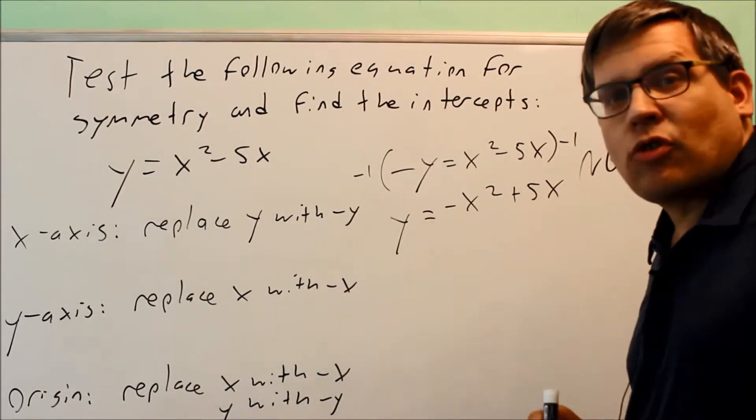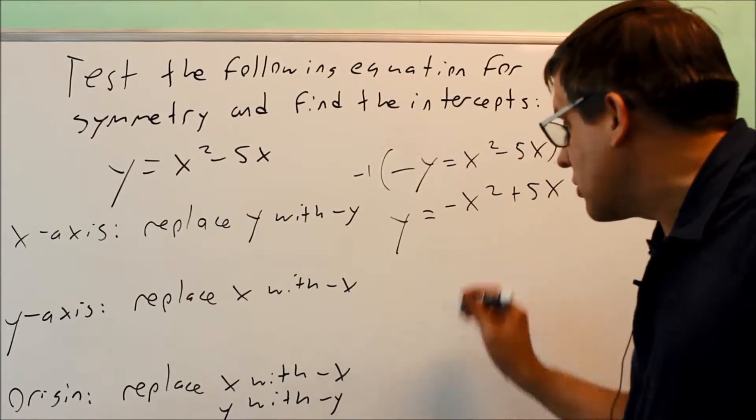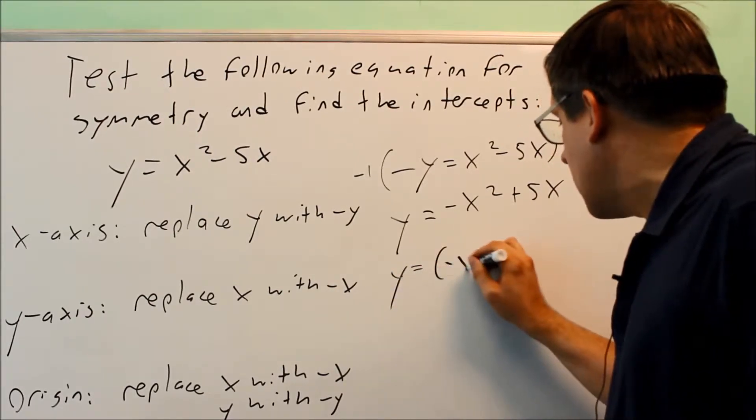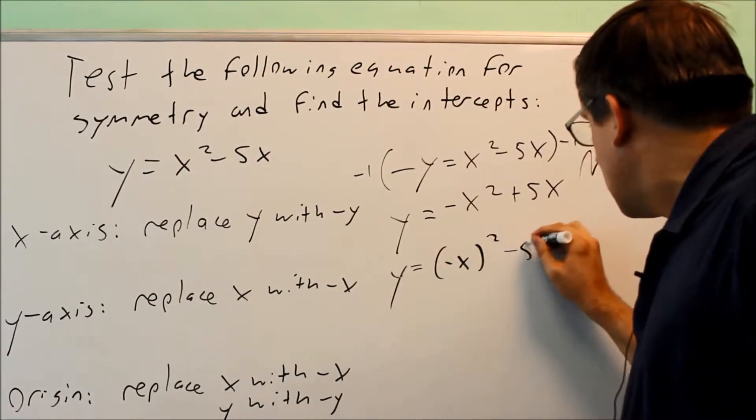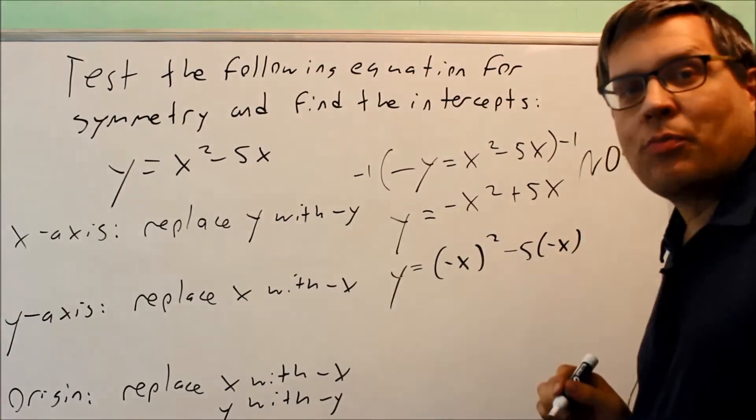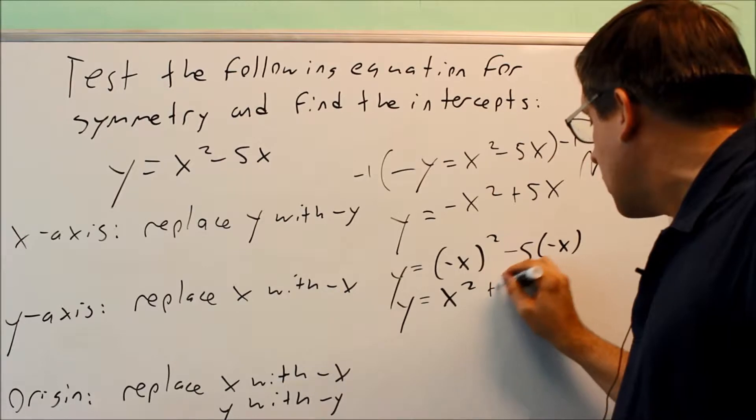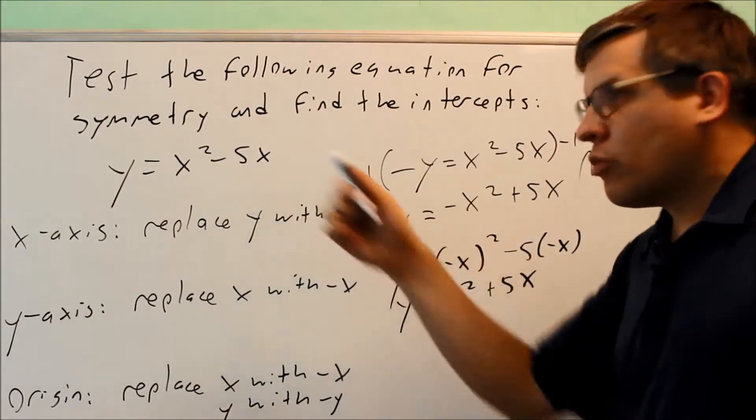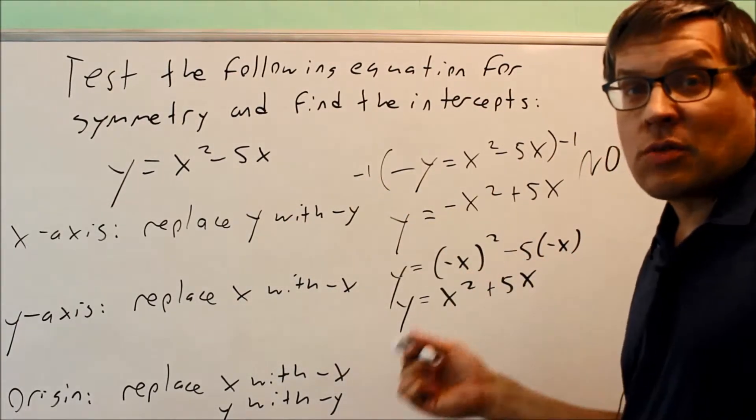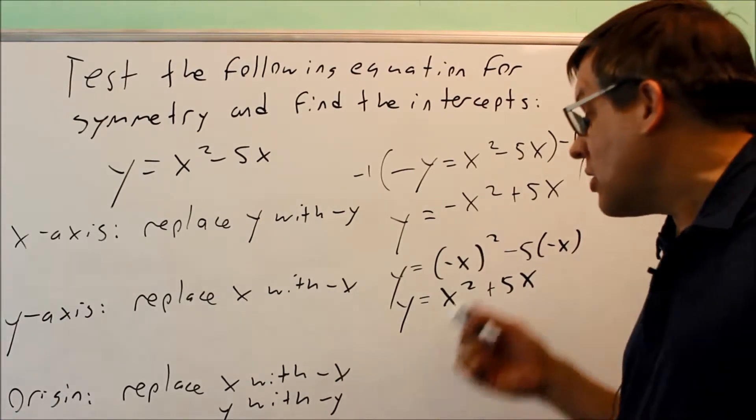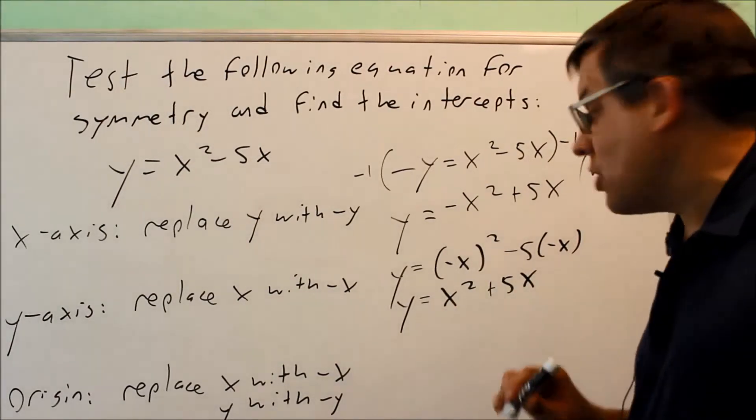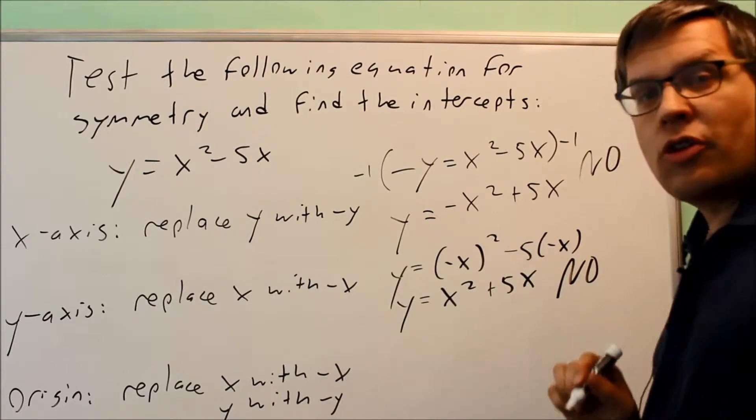Next, we test for y-axis symmetry by replacing x with -x. Substituting -x for both x's and simplifying, we get y = x² + 5x. That's not equal to the original equation either, so it does not have y-axis symmetry.